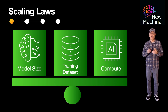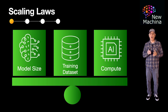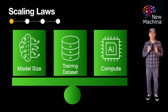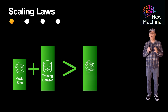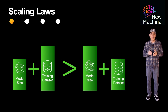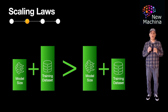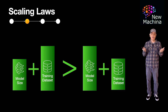The Chinchilla paper, officially titled Training Compute Optimal Large Language Models, was published by researchers from DeepMind in March of 2022. I've included a link to this paper in the YouTube description for this video. It summarized the results of experiments for a given fixed compute budget. It found that smaller models trained on significantly larger datasets outperformed larger models trained on limited datasets. This suggests that optimal performance is achieved by balancing model size and training data.